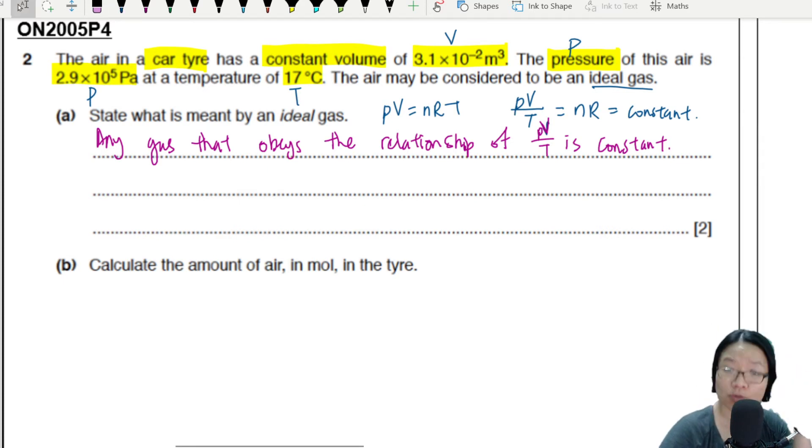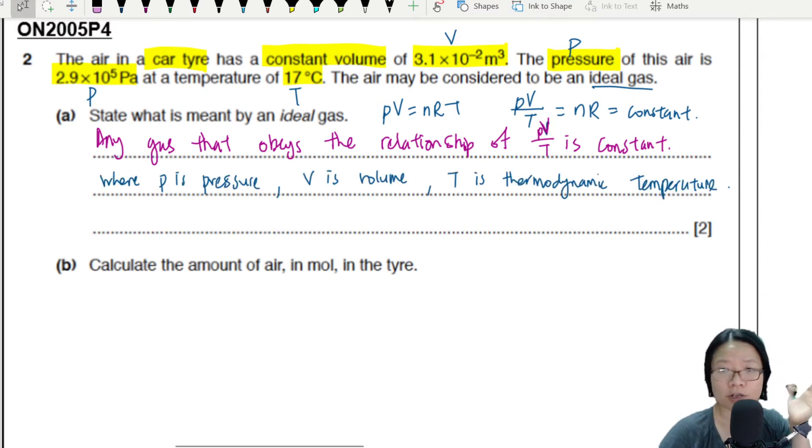Okay, to be extra safe, the second mark should tell us what P, V, and T represents, because these symbols are not given in the description of the question. So P is pressure, V is volume, and T is thermodynamic temperature.